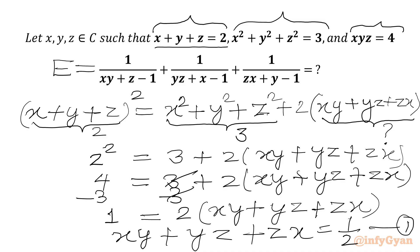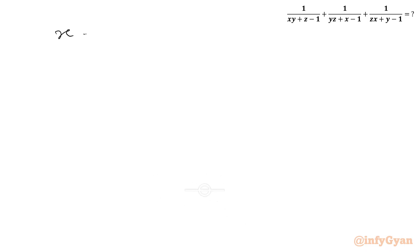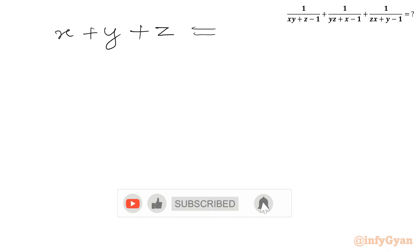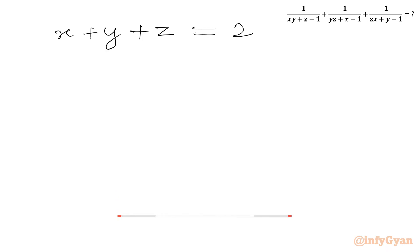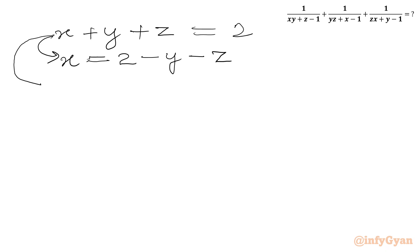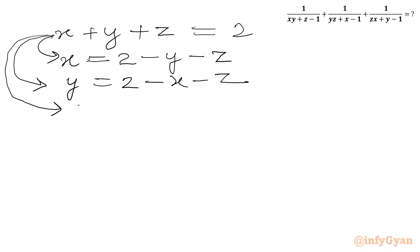Now I will consider x plus y plus z equal to 2. From here I will calculate the value of x in terms of y and z: x equals 2 minus y minus z. I can also calculate y in terms of x and z: y equals 2 minus x minus z. And z in terms of the remaining two variables: z equals 2 minus y minus x.